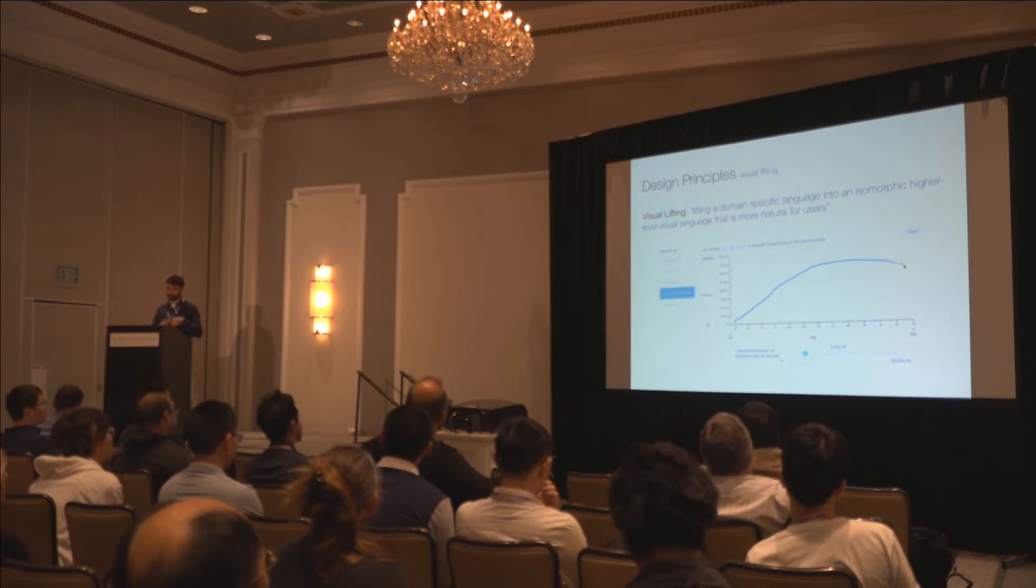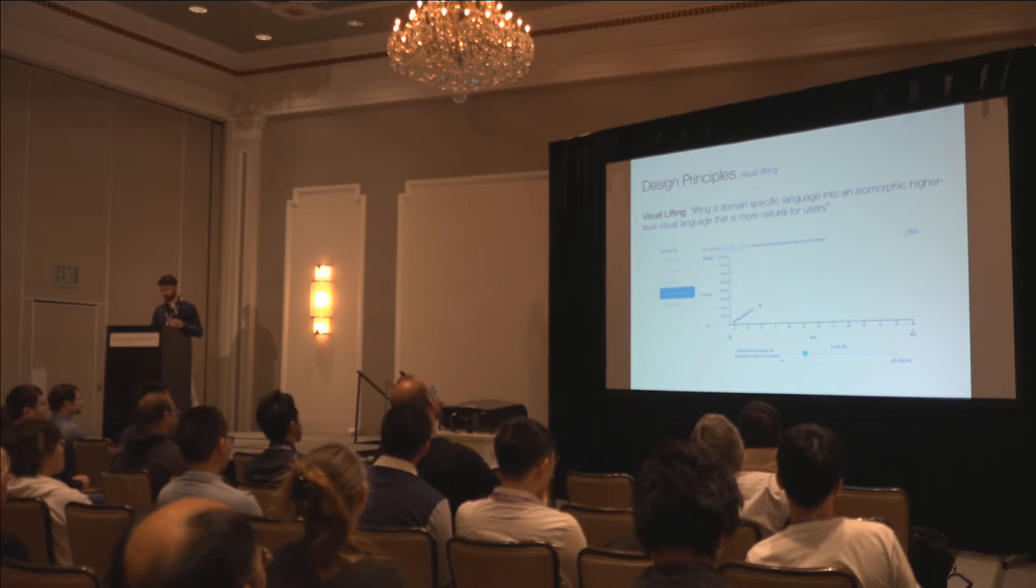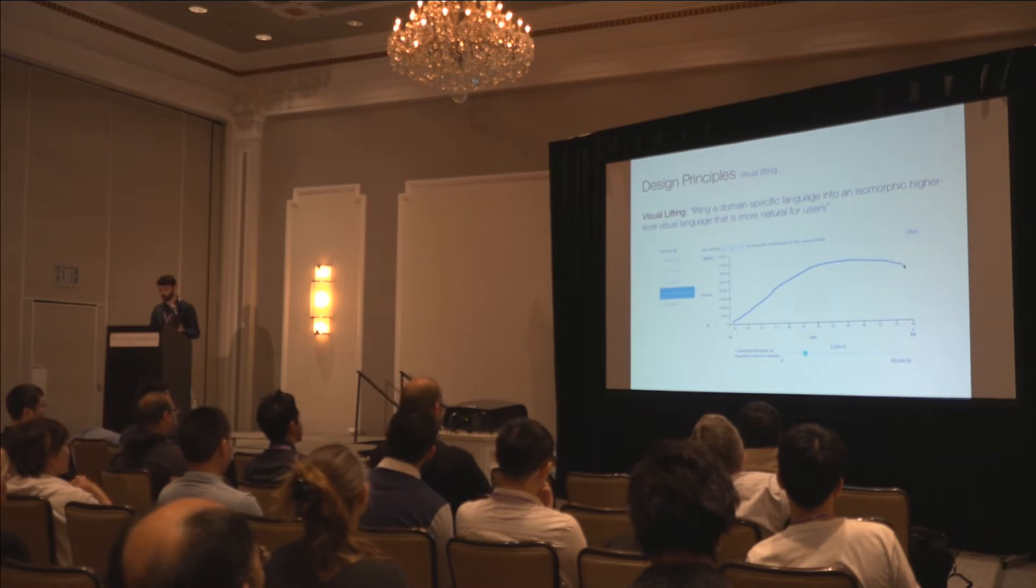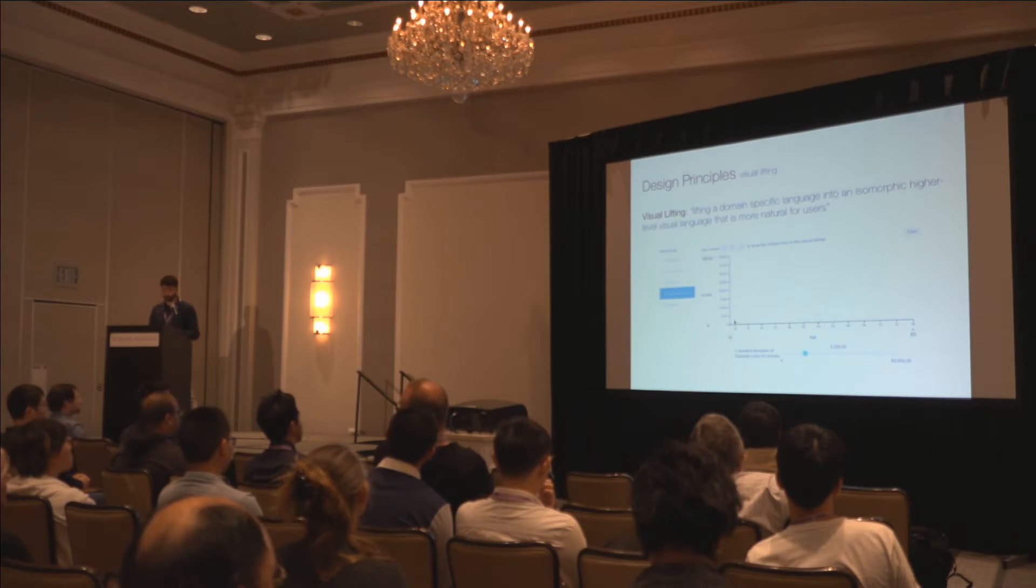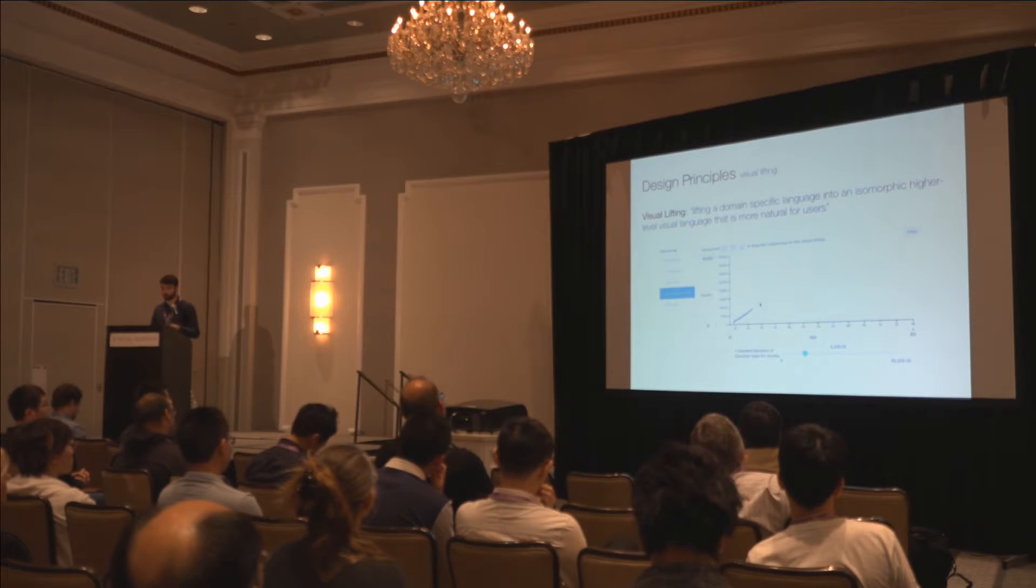This term means lifting a domain-specific language into an isomorphic, higher-level visual language, which is more natural for users. So a good example of this in SINNER is the visual relationships, as you saw in the demo, where users can simply define how two fields are related by sketching a trend. And the data is generated by following that pattern.